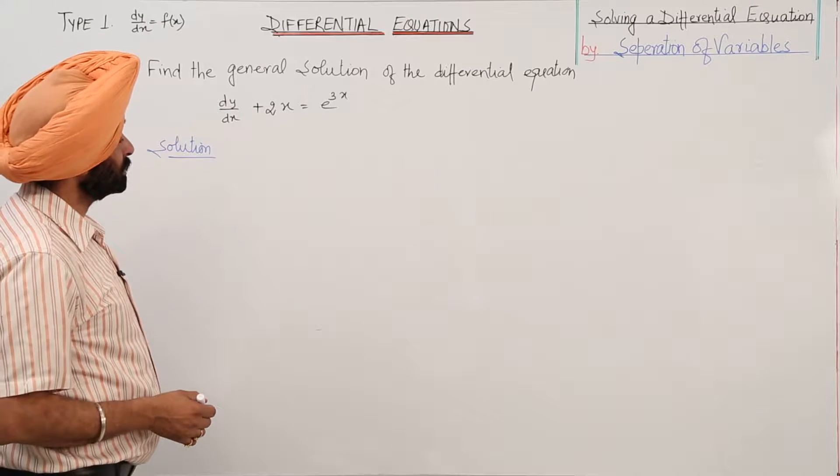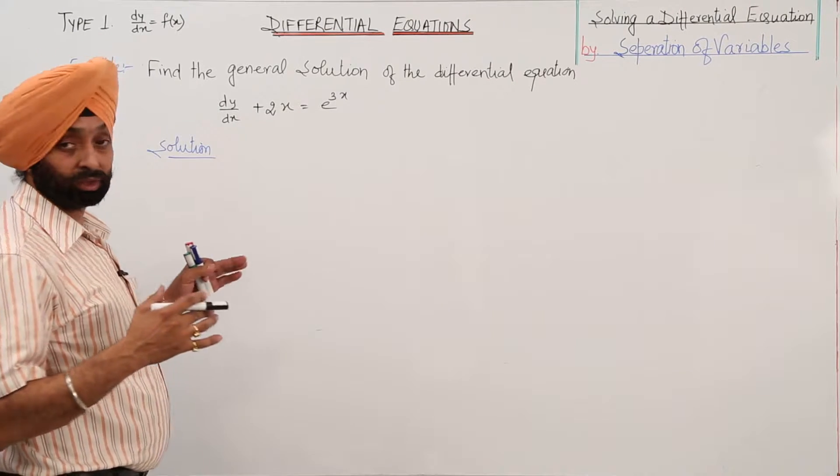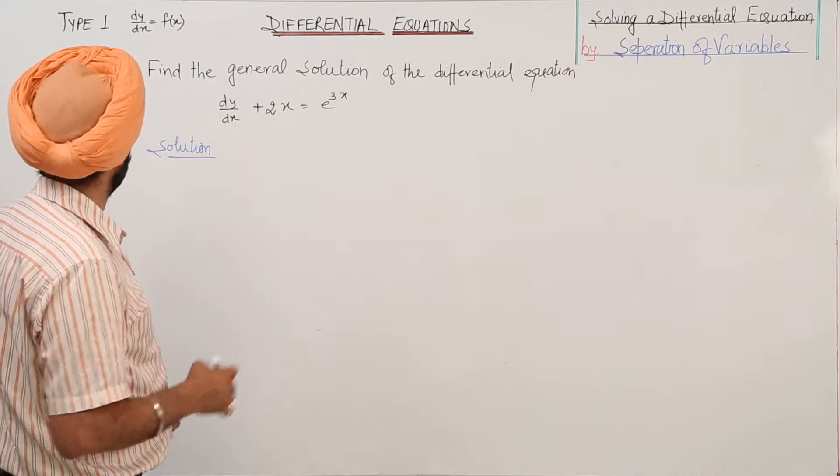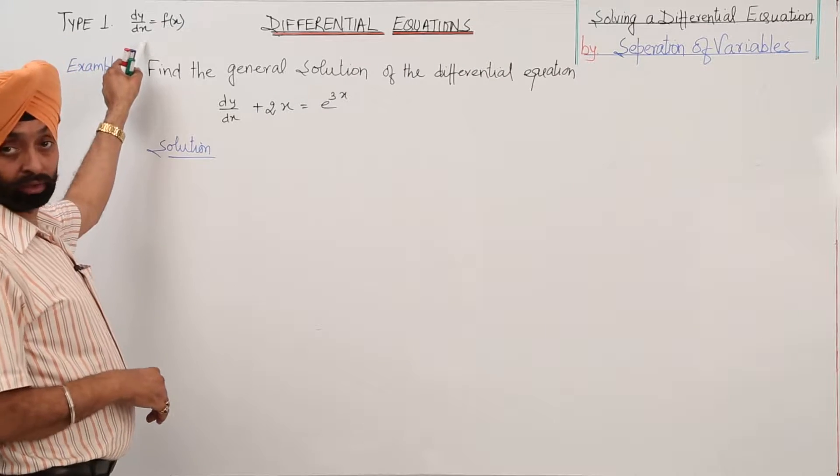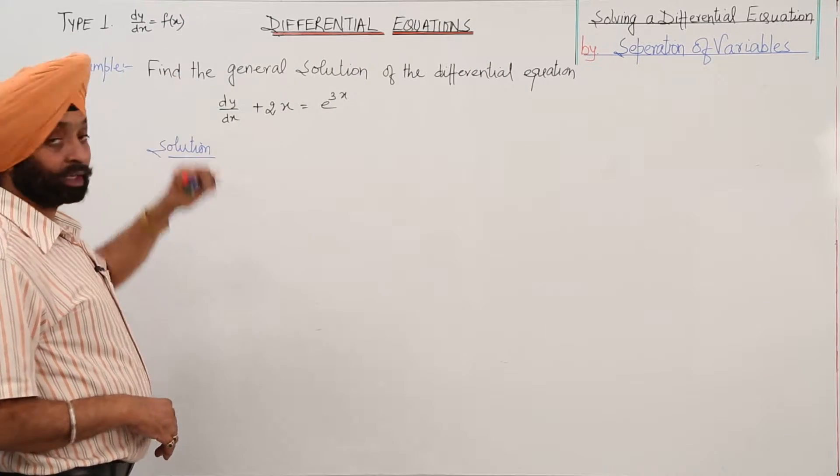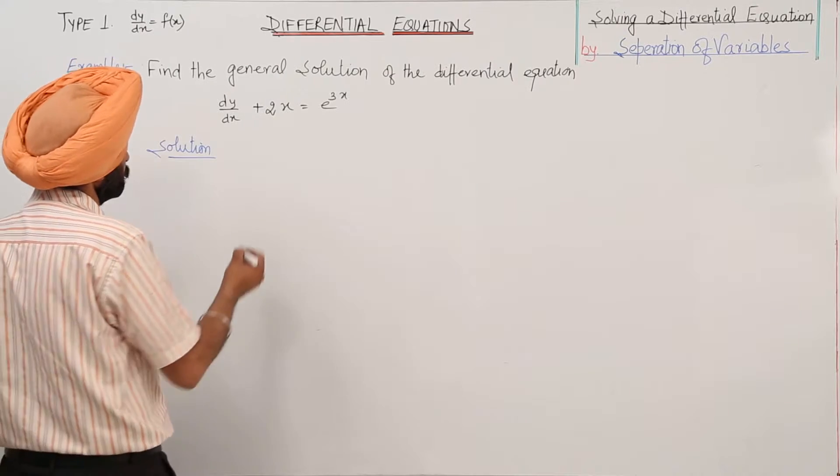For the variable separations, we are going with a very common example, a simple example of type 1. Type 1 is what? dy by dx is equal to fx.